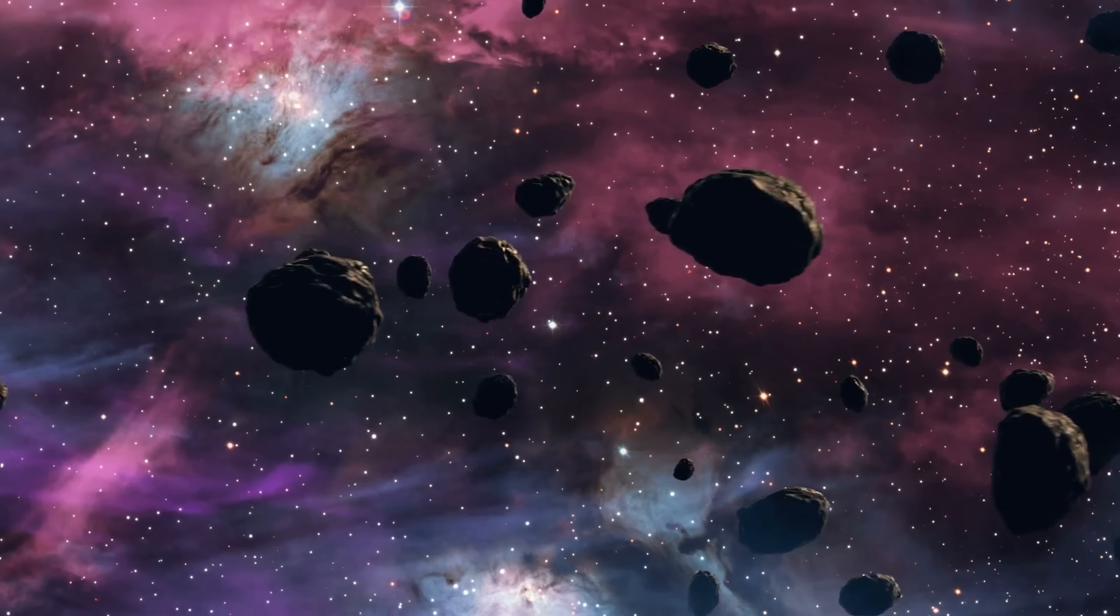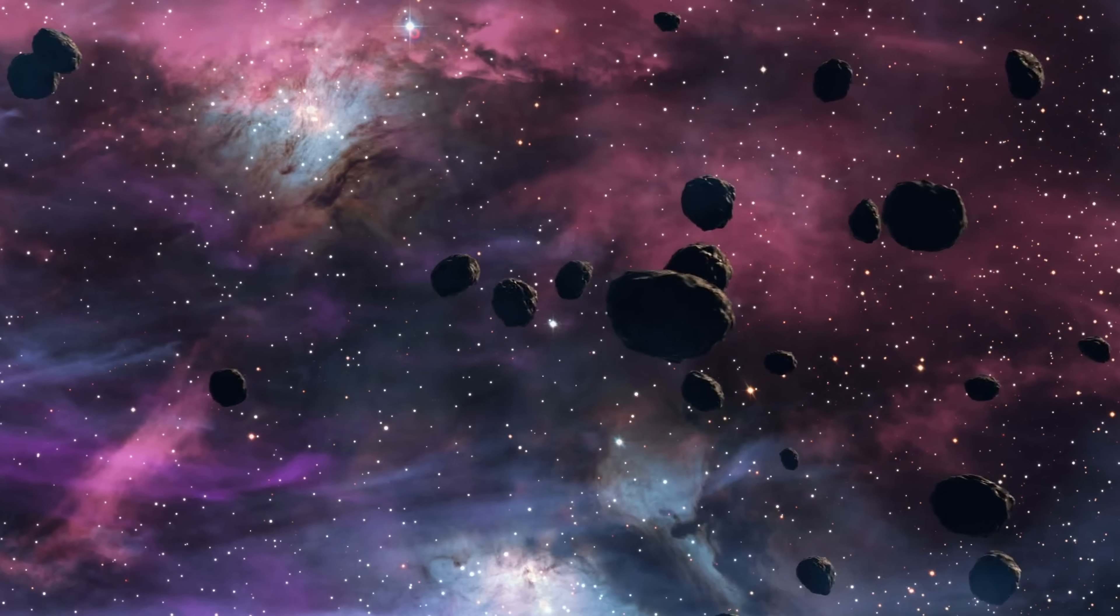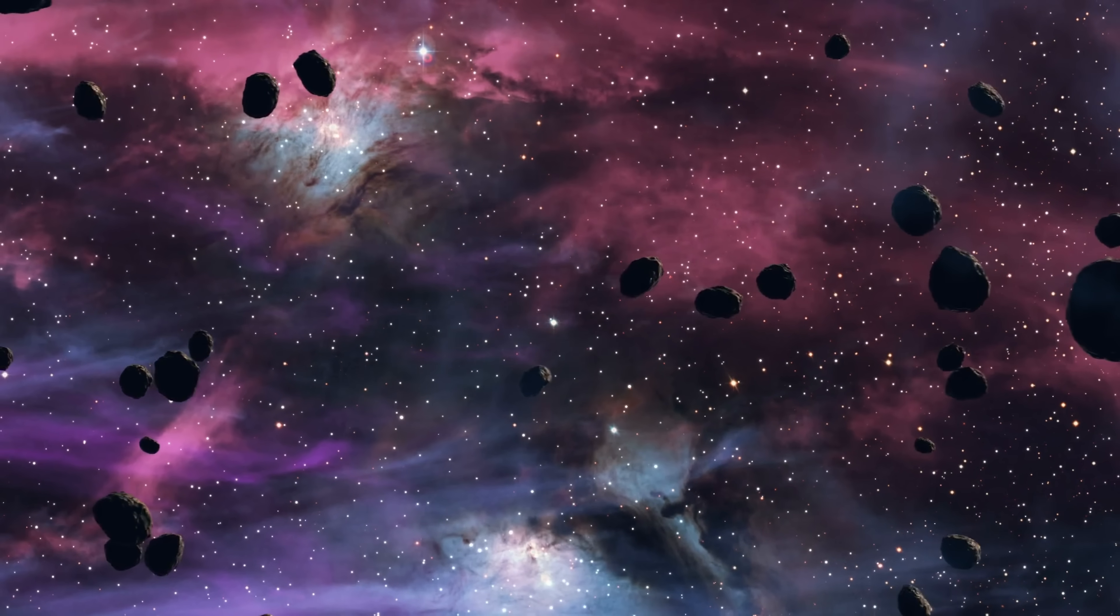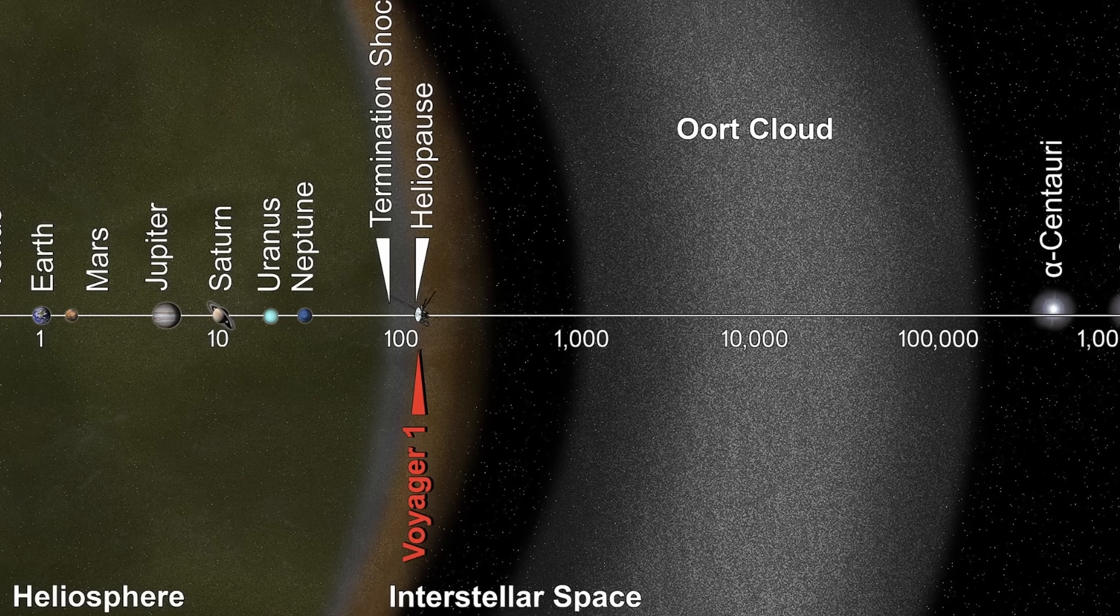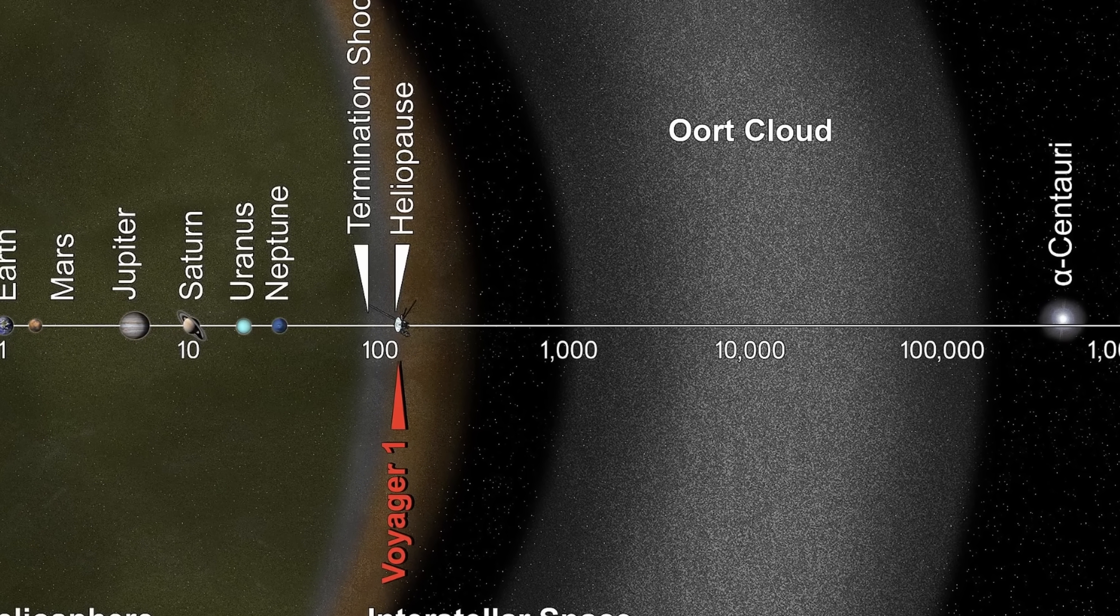An enormous cloud of different icy planetesimals that seems to surround the solar system on all sides and extends to a tremendous distance of almost 3.2 light years.